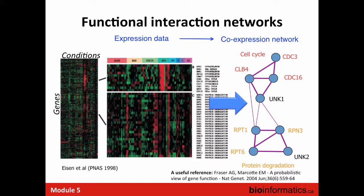If this association is strong enough, we have compelling evidence that a gene is involved in the cell cycle or protein degradation. Once you have the network, you can use network layout algorithms to locate nodes in two-dimensional space. Force-directed layouts put genes with strong links close together on screen, so you can see that an unknown gene is positioned near genes it has strong links with.